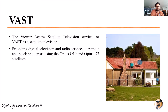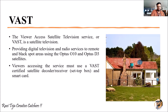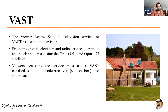For this VAST service, we use two particular satellites called Optus O10 and Optus D3. VAST uses a decoder or receiver set-top box, and this set-top box has a smart card inserted into it. Using this smart card, we are able to access services related to radio or digital television based on our subscription.